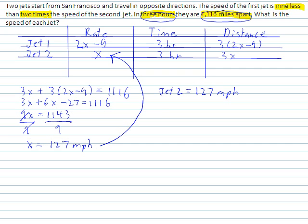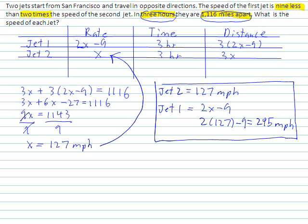And by simple substitution, we can figure out the rate of jet 1. Because we know the rate of jet 1 equals 2x minus 9, right? So 2 times 127 minus 9 comes out to 245. And we know that's miles per hour. So now we know both the rate of jet 1 and jet 2. And that's all there is to it.